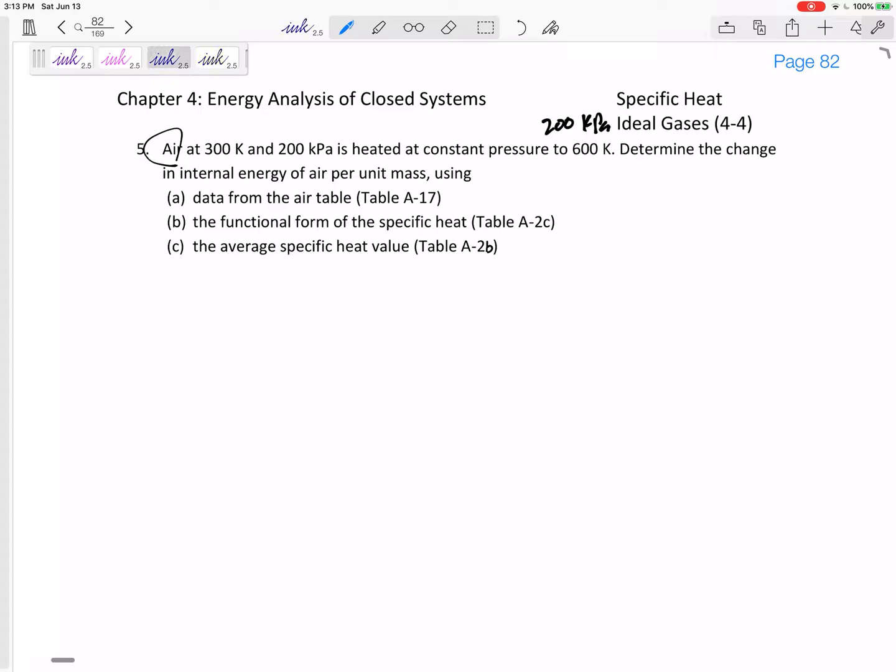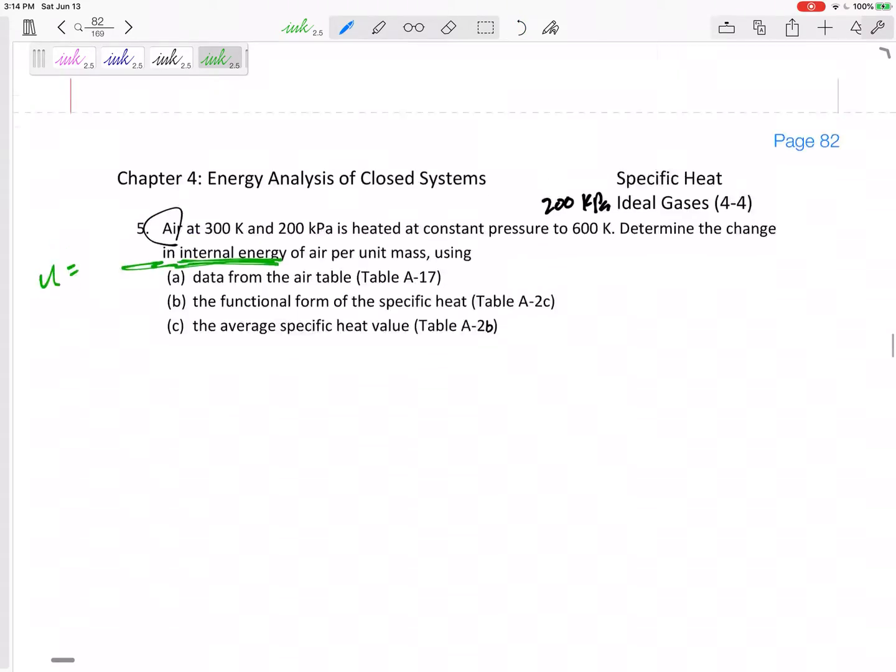In general, constant pressure makes me think CP, but if it asks for internal energy, for U, the only way we can find U is with CV. So we're going to use CV.